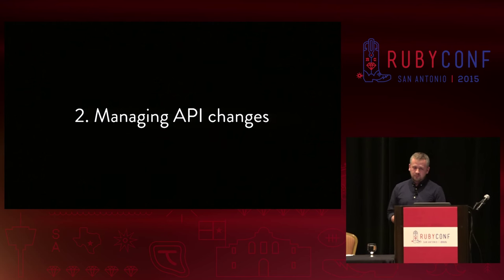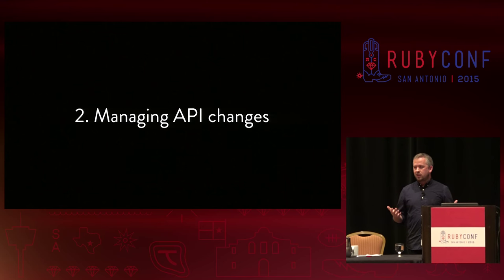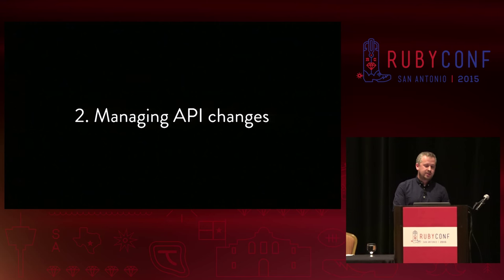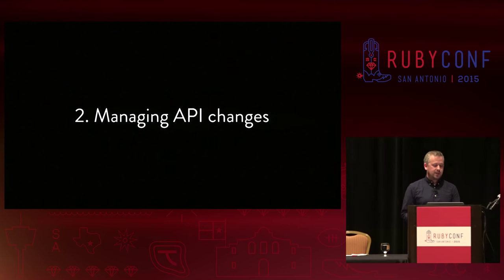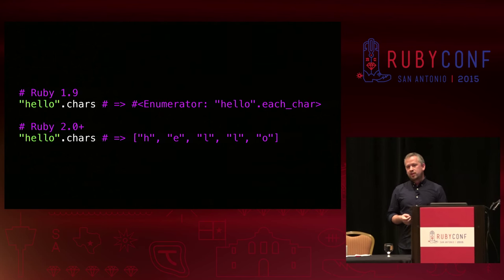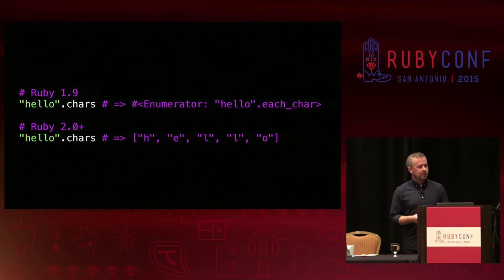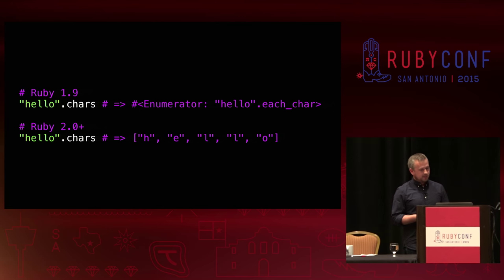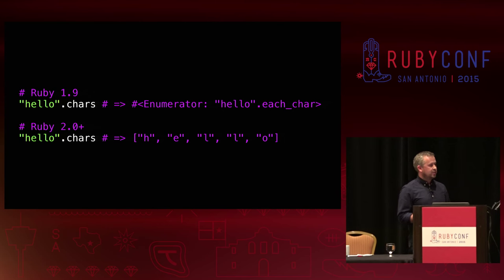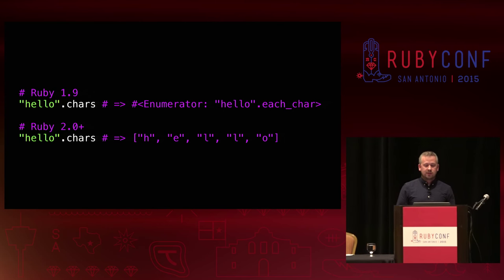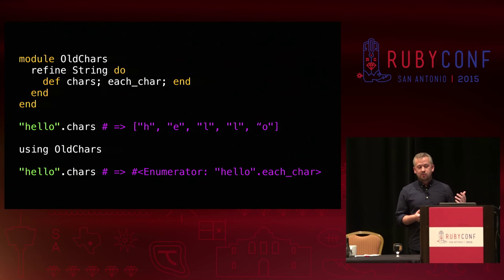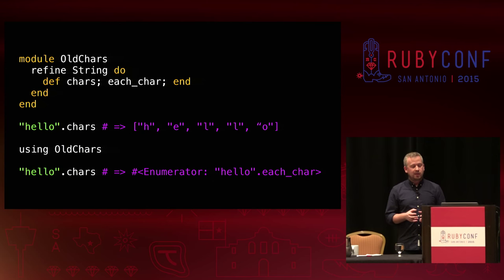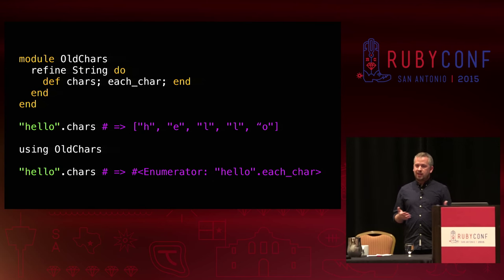Sometimes software we depend on changes its behavior over time as new versions are released. APIs can change, and even the language itself can change. For example, in Ruby 2, the behavior of the chars method on string changed from returning an enumerator to returning an array of single character strings. Now imagine we're migrating an application from Ruby 1.9 to Ruby 2 or later, and we discover that some part of our application is relying on this earlier behavior of chars. We can use refinements to preserve the original API without impacting any other code that might have already been adapted to the new API — a simple refinement we could activate only for the code which depends on that Ruby 1.9 behavior, while the rest of the system and any dependencies remain unaffected.